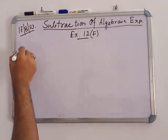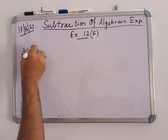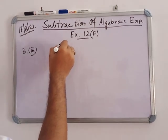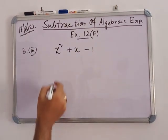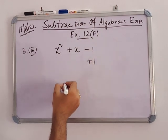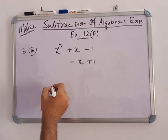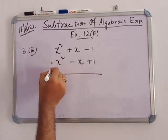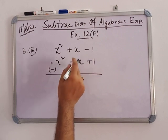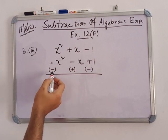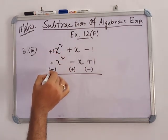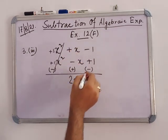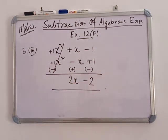In number 3: subtract x plus x squared minus 1 from 1 minus x plus x squared. Write the column, change the signs. Plus 1 and minus 1 cancel to give 0. Minus x plus x gives plus 2x. And minus x squared plus x squared cancel. So the answer is 2x minus 2.